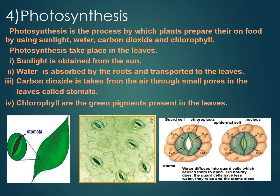Let us discuss autotrophic nutrition in plants, i.e., the process of photosynthesis. Green plants are autotrophic — they can make their food by photosynthesis. In photosynthesis, photo means light and synthesis means putting together. So photosynthesis is the process by which green plants prepare their own food from simple compounds like carbon dioxide and water, using sunlight which is captured by chlorophyll present in green leaves.